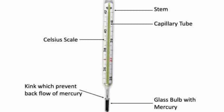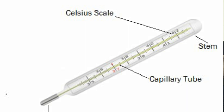The second part is the stem — a glass capillary tube through which the mercury or alcohol rises or falls as the object around the bulb warms or cools. The third part is the scale — the graduations marked all throughout the thermometer on the stem — which indicates the temperature of the substance.